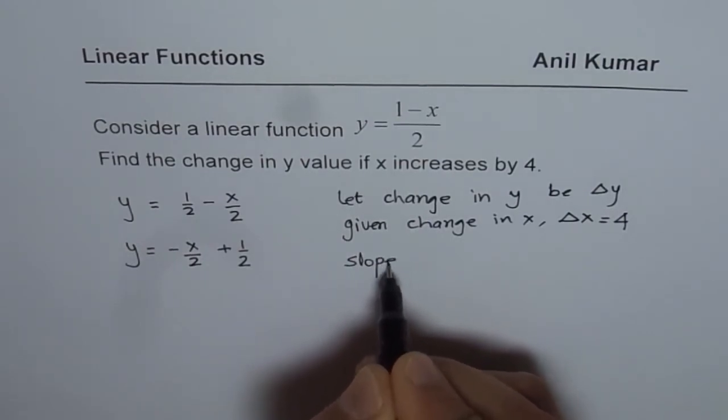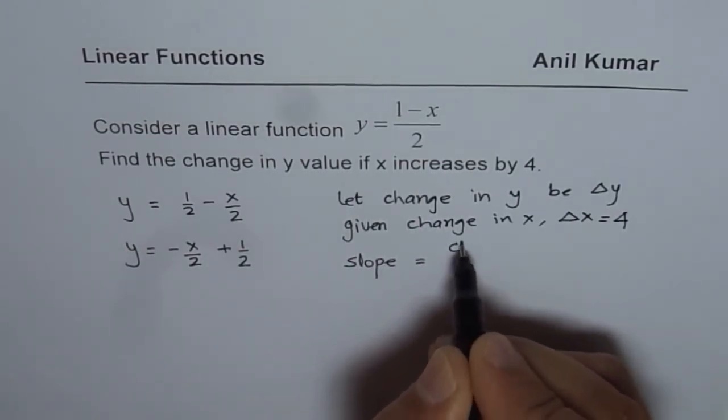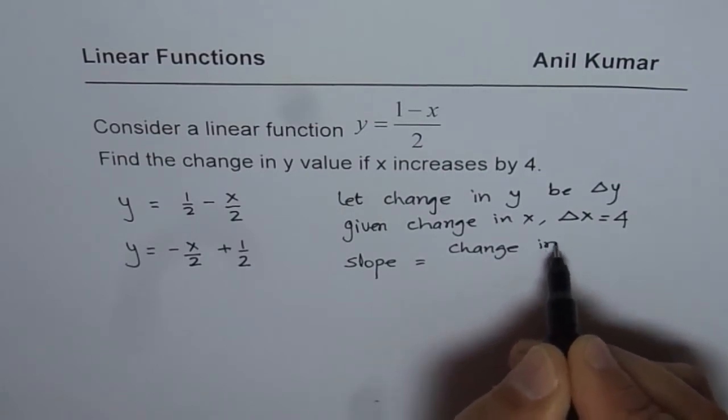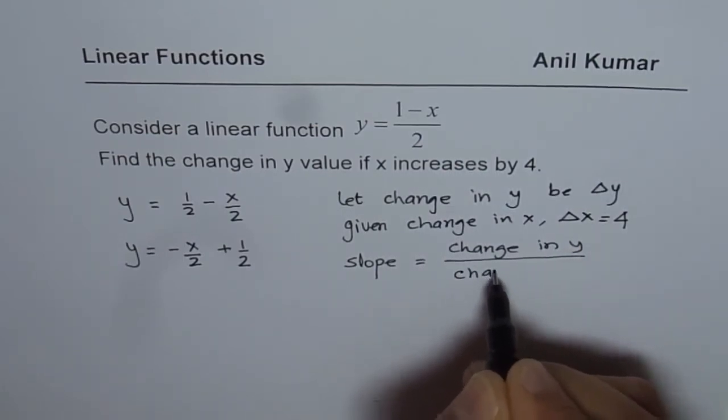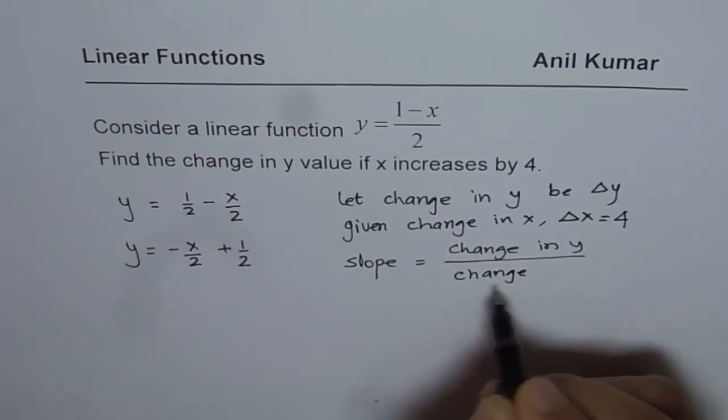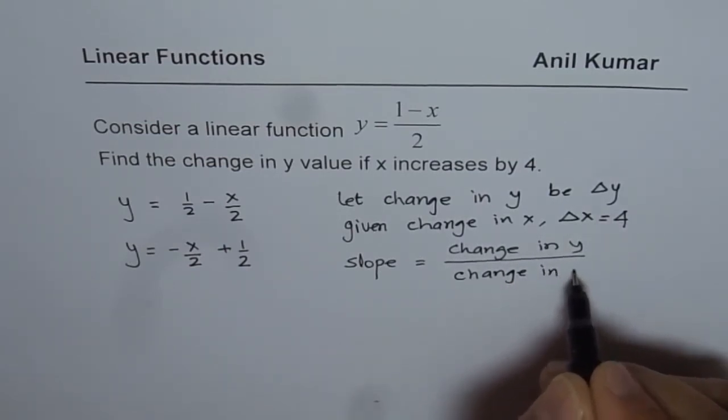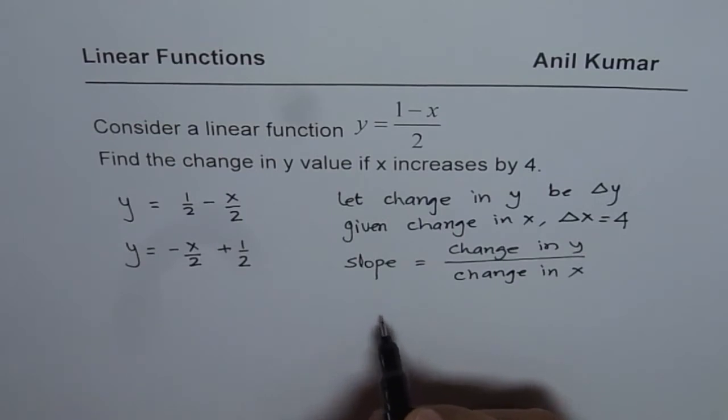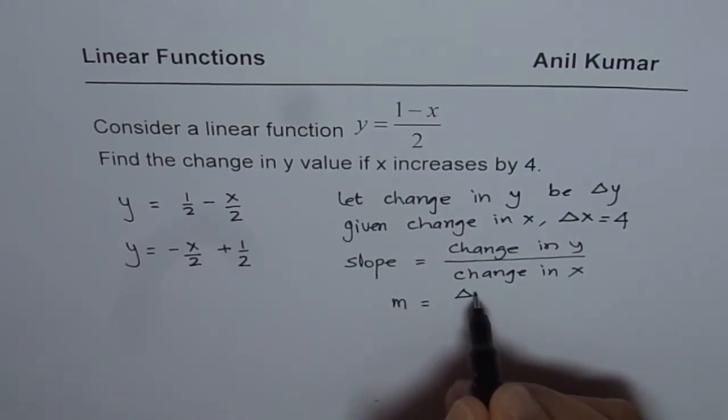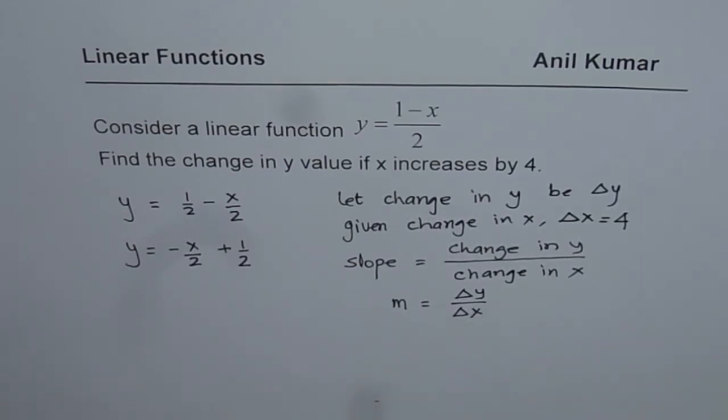Slope is change in y divided by change in x, correct? That is what slope is, change in x. Or you can say m, normally you write this as m equals delta y over delta x, correct? So that is what it is.